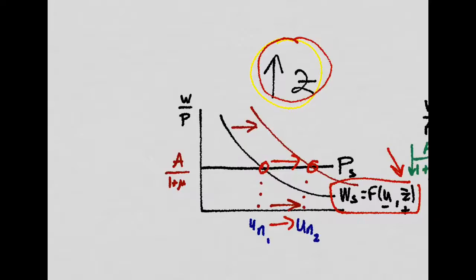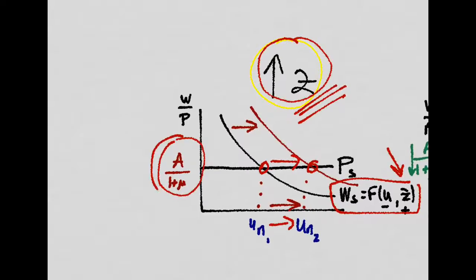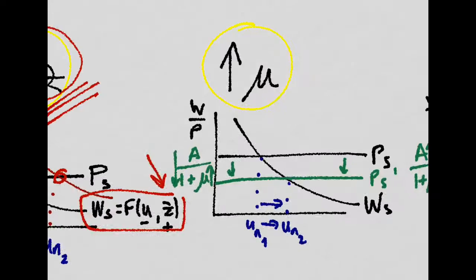But the real wage hasn't changed. So, funny enough, when trade unions beg for higher workers' protection, they're not actually increasing the real wage, which is constant, but they're increasing the unemployment rate of the economy, what we call an equilibrium, the natural unemployment rate.